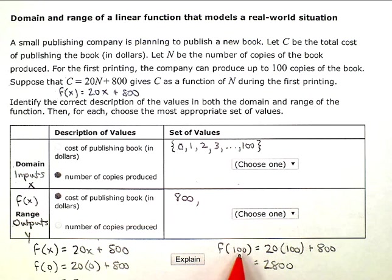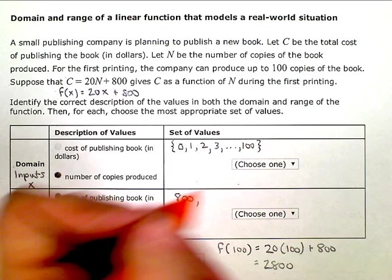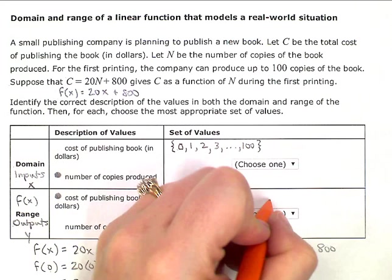So to print all 100, my cost on the other end is going to be $2,800.